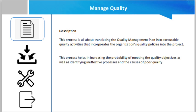This process replaced the Perform Quality Assurance process under the executing process group. Although Manage Quality is also sometimes called quality assurance, PMBOK does that too, but Manage Quality covers a broader area. This process is all about translating the quality management plan into executable quality activities that incorporate the organization's quality policies into the project. It helps in increasing the probability of meeting quality objectives as well as identifying ineffective processes and causes of poor quality.